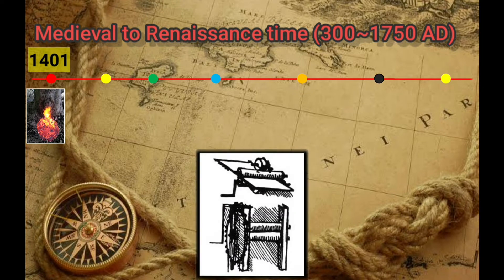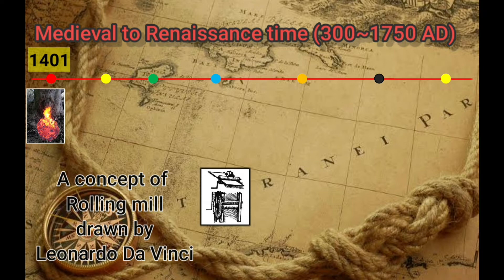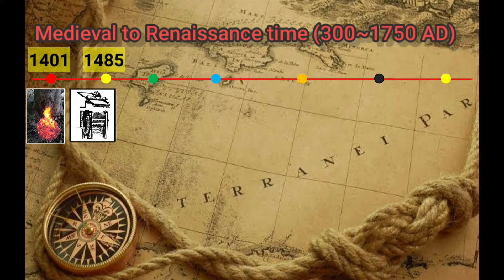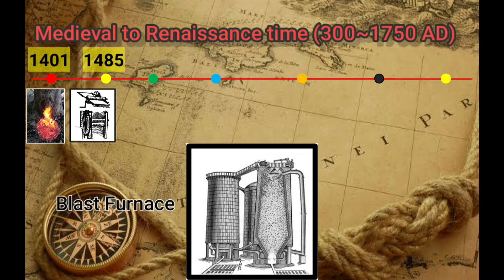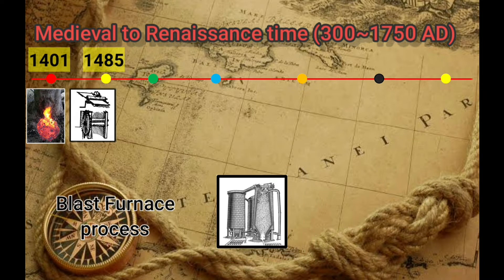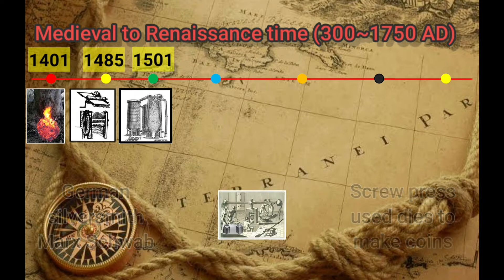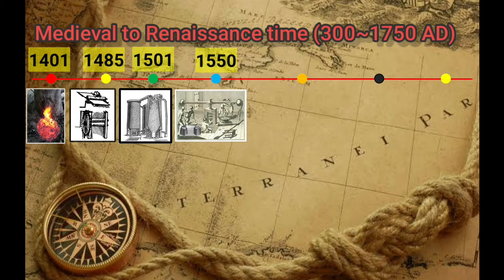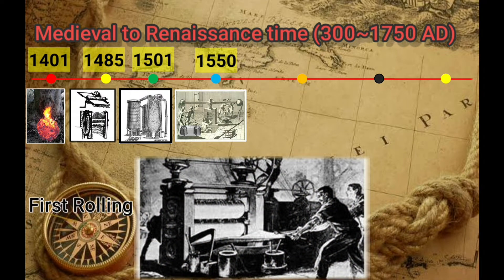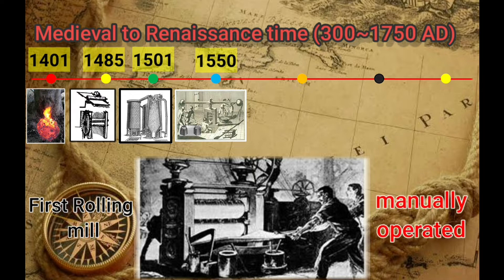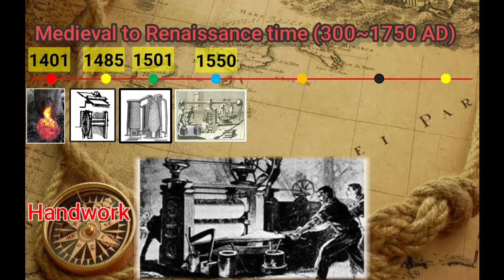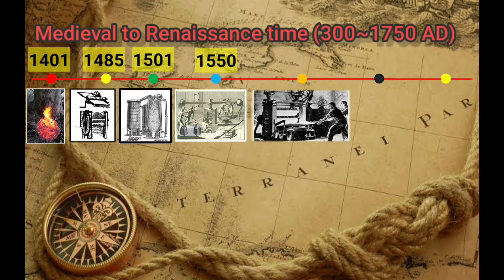In 1485, Leonardo da Vinci sketched a concept of a rolling mill. In the beginning of the 16th century, the blast furnace process became most popular as it was twice as fast as smelting. The German silversmith Marc Schwarer invented a screw press to make coins in 1550. The Winches rolling mill was finally developed in 1590, which had two heavy cylinders to roll different types of metals. This was a key milestone in the history of sheet metal, as the screw press and rolling mill created a base for future stamping technology.